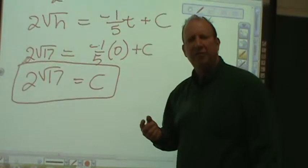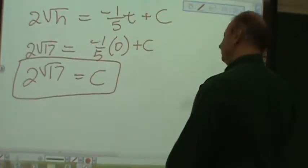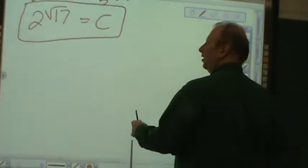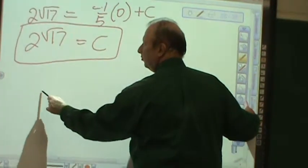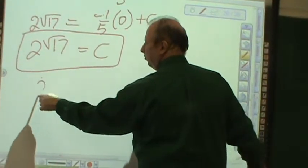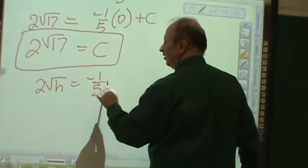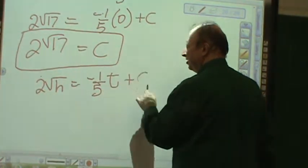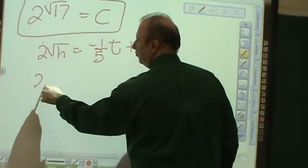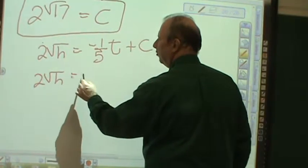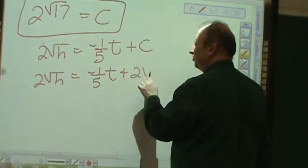Now that I've got 2√17, what do I do? I go back to the original equation. And let's see what that original equation was. 2√h equals negative 1/5 t plus c. And since I know what c is now, 2√h equals negative 1/5 t plus 2√17.